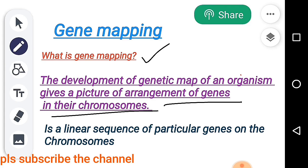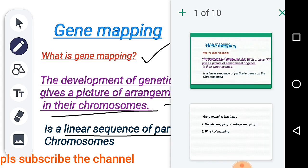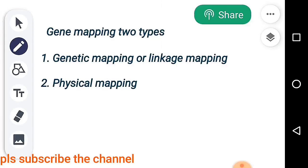A chromosome is a linear sequence of particular genes. What is Gene Mapping? There are two types of Gene Mapping: the first is Genetic Mapping and Linkage Mapping, and the second is Physical Mapping.